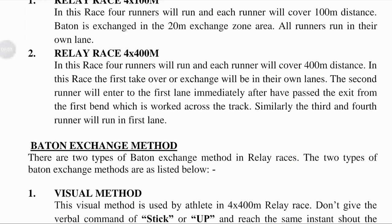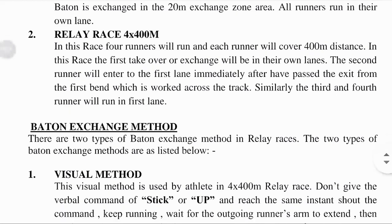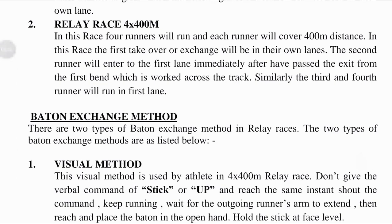In the 4x100 meter relay race, the baton is exchanged in the 20 meter exchange zone — a short stick or tube interchanged in the area where the baton must be passed from one runner to another. All runners run in their own lane, meaning each athlete running on the standard track must stay within their designated narrow lane.